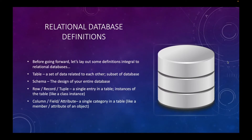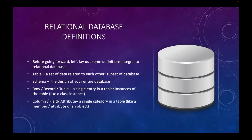Some relational database definitions: A table is a set of related data — a subset of a database. You can think of it almost like a class in object-oriented programming; a users table is like a User class. Schema is the design of your entire database — it can mean the layout of a single table or the whole big picture of what's in your database. It's a loaded word, but when I mention schema it's usually about the layout of your database.